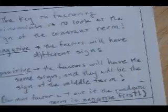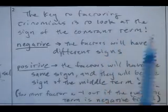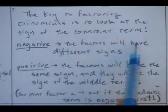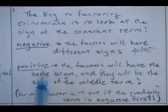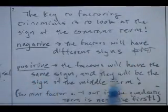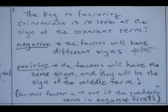The key to factoring, always, to factoring a trinomial is to look at the sign of the constant term. When it's negative, you know the factors will have different signs. When it's positive, it becomes a lot easier because the factors will have the same sign, and the sign that they'll have will be whatever the sign of the middle term.